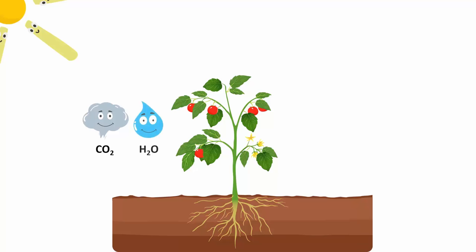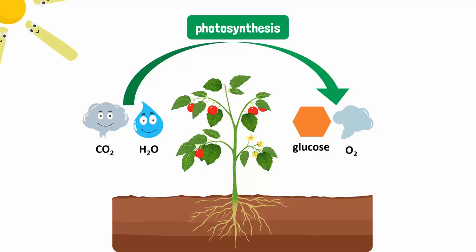In the presence of sunlight, carbon dioxide and water react to form glucose and release oxygen. This happens during the day. The glucose is transported by phloem vessels from the leaf to different parts of the plant.